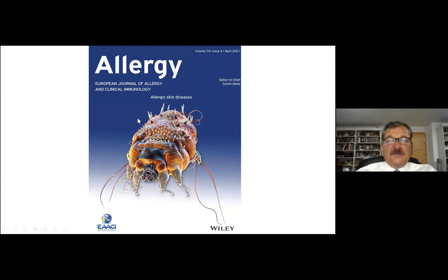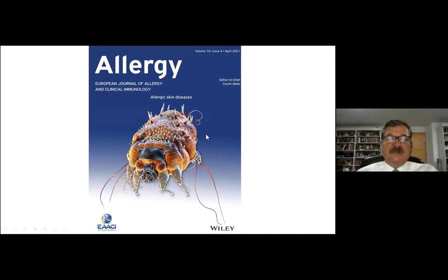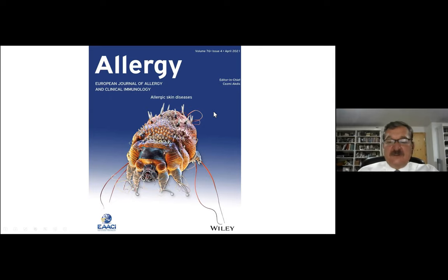Here is another important part of the type 2 response. This is Sarcoptes scabiei, the agent of scabies. It makes a skin inflammation and again an eosinophilic inflammation in the skin, and a type 2 response develops against the Sarcoptes. It doesn't go to deeper tissues — it stays in the skin and is expulsed from the skin with itch, scratch, and eosinophilic inflammation.